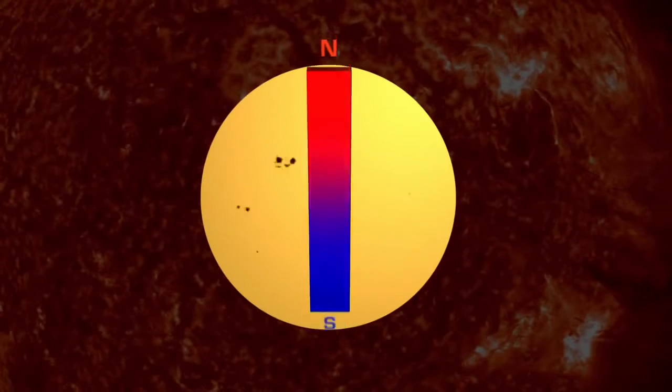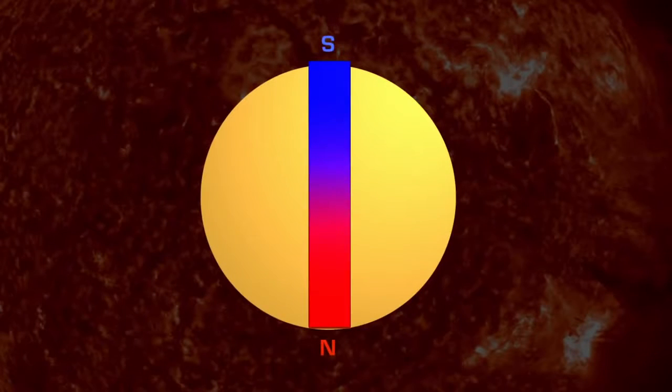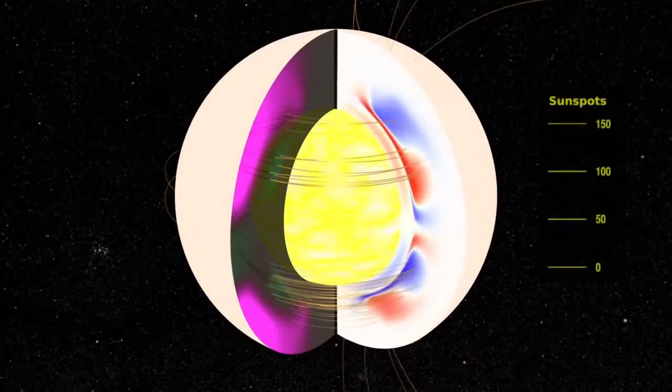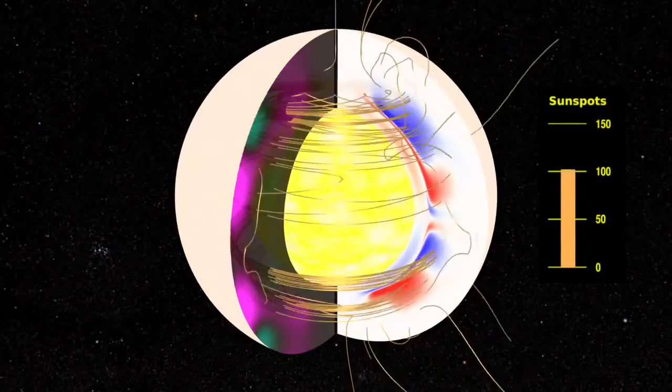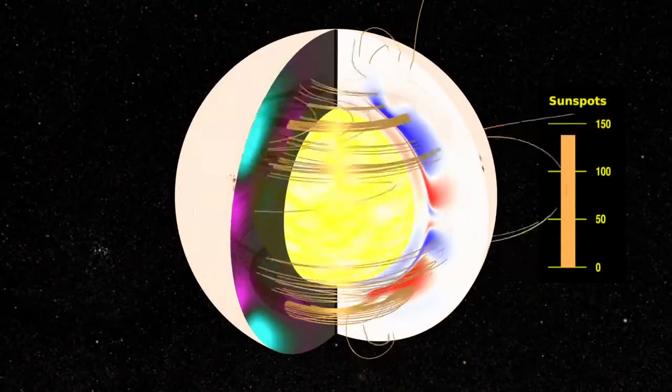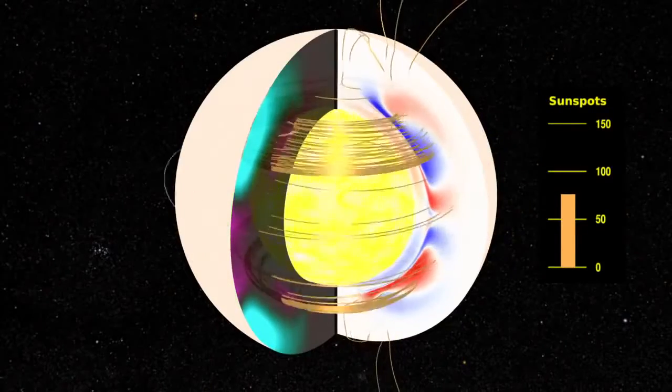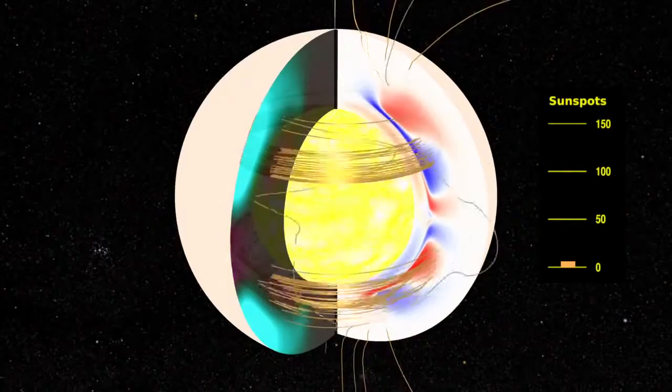Every 11 years, the Sun's poles flip. North becomes south, and south becomes north. So every 22 years, the poles return to the position where they started the cycle. The flip is due to the complex movement of magnetic fields inside the Sun that are constantly stretching, twisting, and crossing as solar material bubbles up from the Sun's core. But the exact pattern of movements is not yet mapped out.